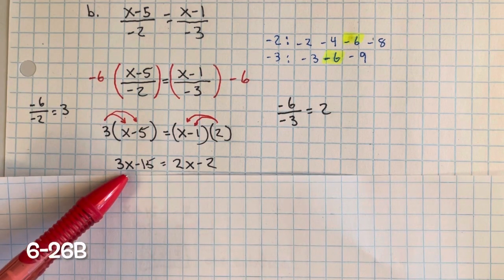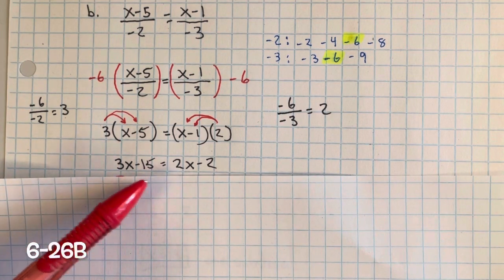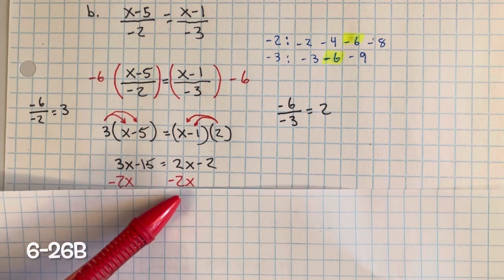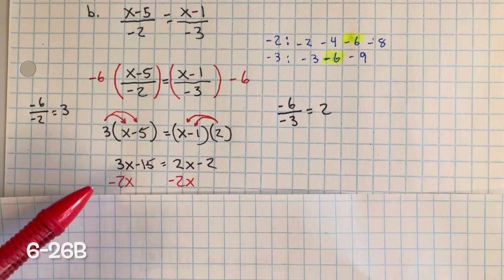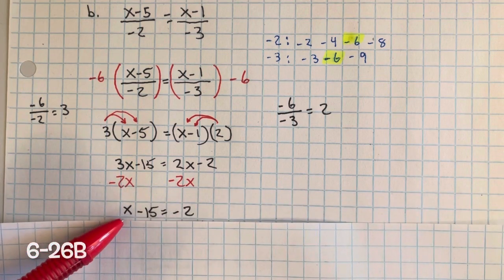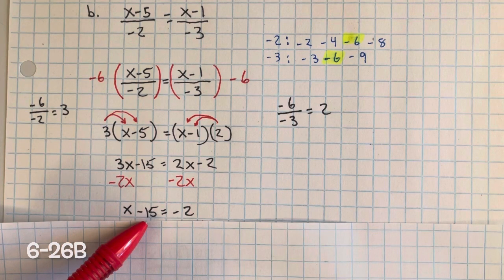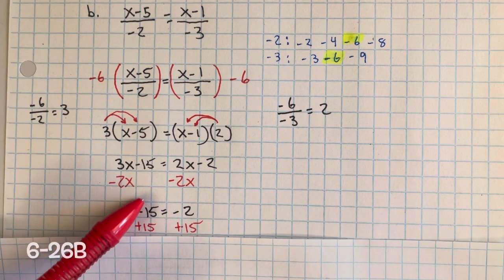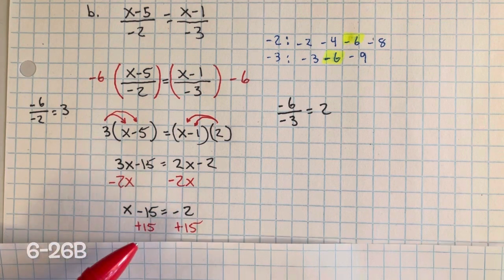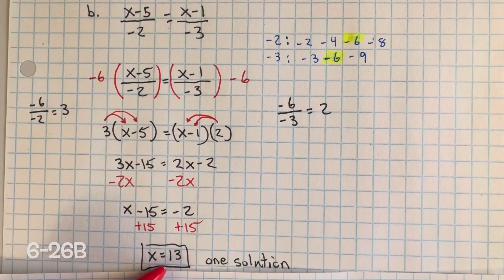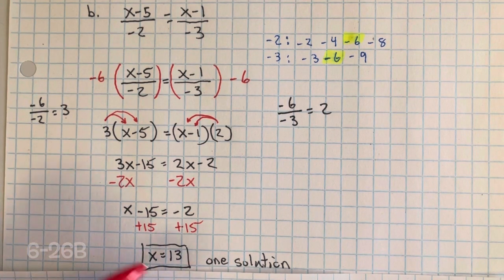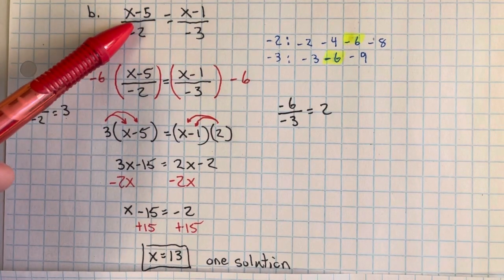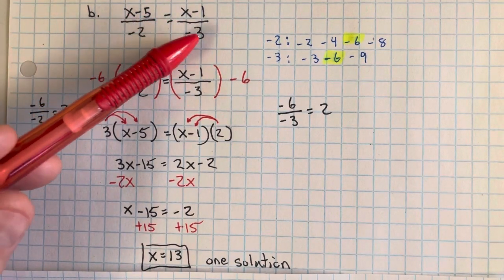Now we continue to solve for x. We want the x values on the side with a greater value, so we subtract 2x from both sides — zero pair. 3x minus 2x is x. The inverse property of subtraction is addition, so we add 15 — zero pair. 15 minus 2 equals positive 13. So x equals 13. There's one solution, meaning the only value that I can put into this equation to make it true is 13.